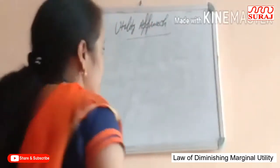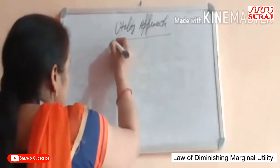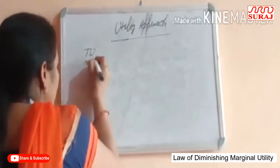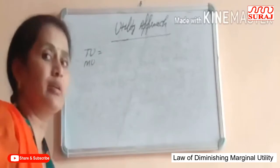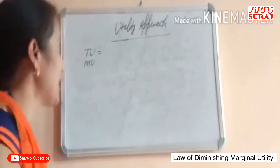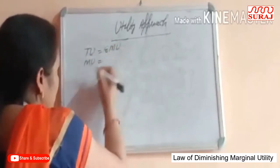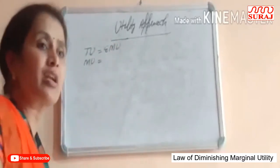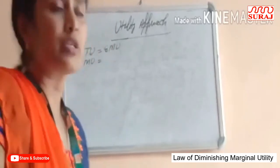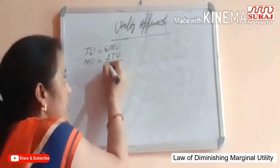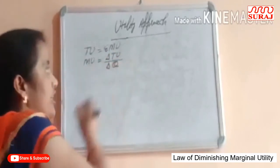Good morning. Welcome to our next class. Today we are discussing the topic of utility approach. Yesterday we learned about the relationship between total utility and marginal utility. Total utility is the sum total of the marginal utility, and marginal utility is the ratio of change in total utility upon change in quantity.